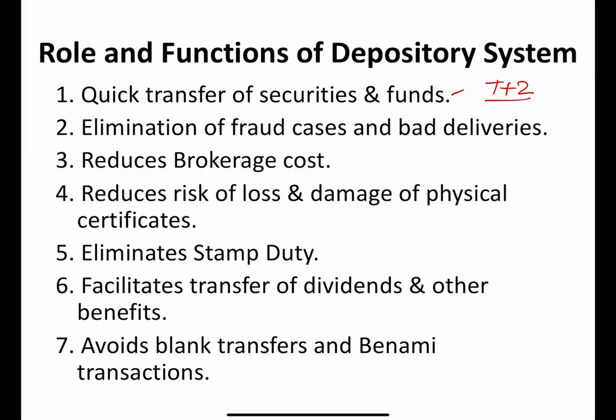The second function is elimination of fraud cases and bad deliveries. As explained, fraud cases are eliminated — duplicate share certificates cannot be made in the present dematerialized form, and bad deliveries will not happen. The third function is reduced brokerage cost. The depository participant reduces the brokerage cost because his burden is reduced — paperless work and filing system. Everything is computerized. The fourth function is to reduce risk of loss and damage of physical certificates.